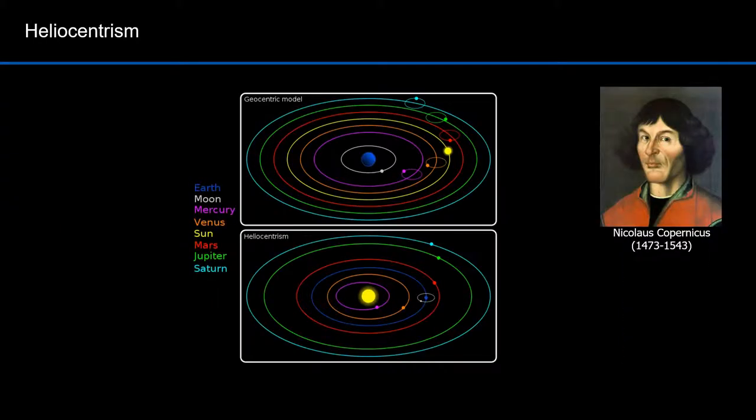Nicholas Copernicus was a Renaissance astronomer and the first person to formulate a comprehensive heliocentric cosmology, which displaced the Earth from the center of the universe. Copernicus's epochal book on the revolutions of the celestial spheres, published just before his death, is often regarded as the starting point of modern astronomy and the defining epiphany that began the scientific revolution. His heliocentric model with the sun at the center of the universe demonstrated that the observed motions of celestial objects can be explained without putting the Earth at rest in the center of the universe.